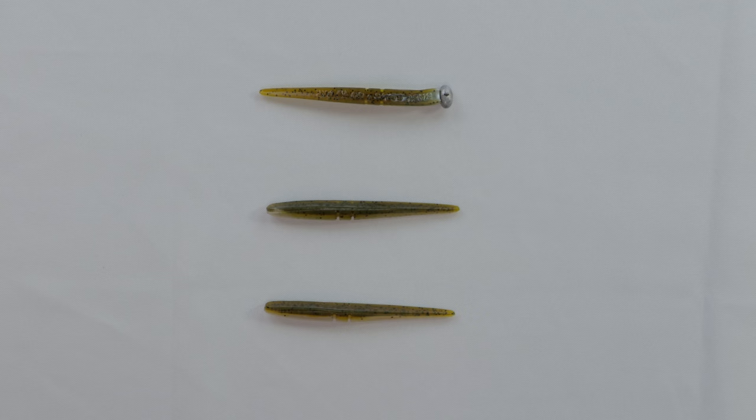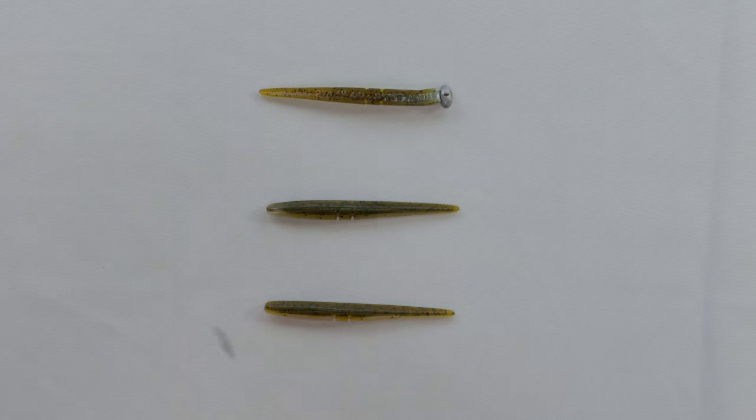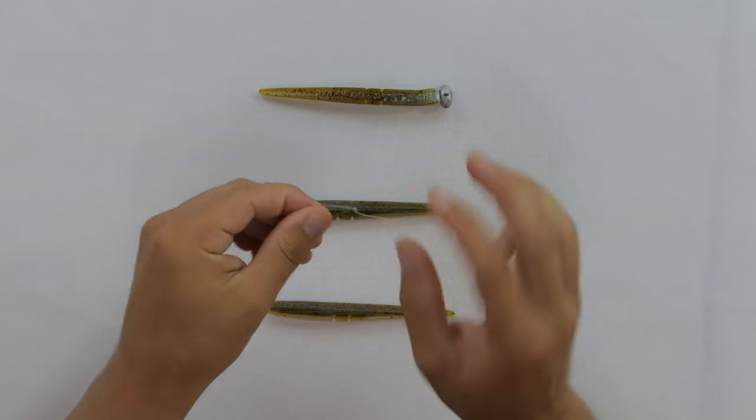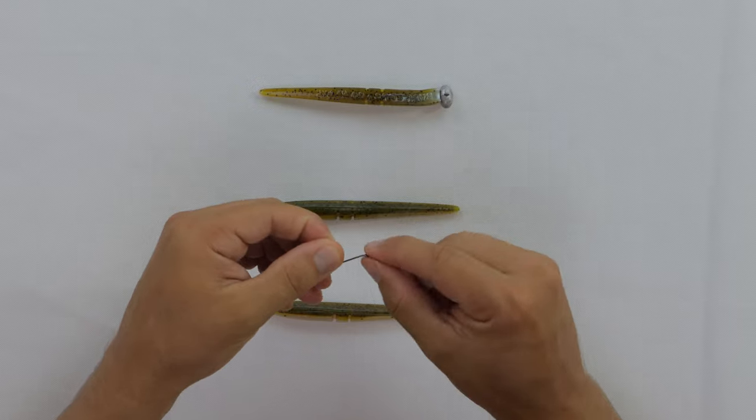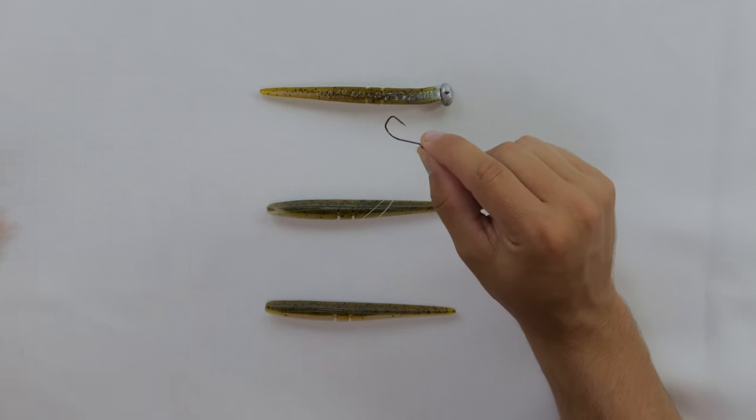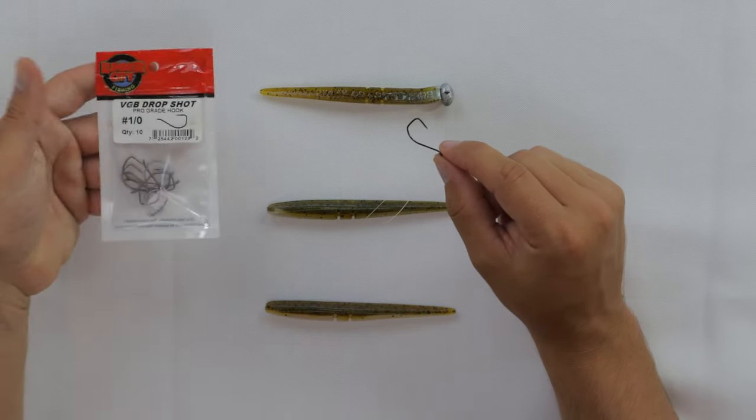Option number two is to throw it on a drop shot. So I have here the 1-0 VGB drop shot hook. This is the bigger of the two sizes. This is what it looks like right here.